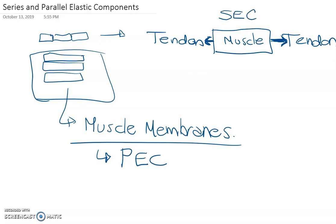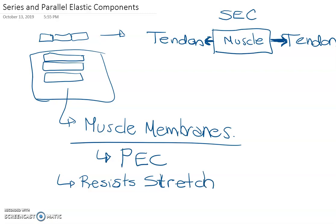The major difference between the two is this: the parallel elastic component — the PEC — resists stretch, and it's passive. The connective tissue of the muscle membranes simply doesn't allow the muscle to be stretched beyond a certain point.